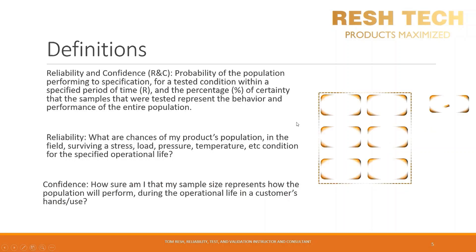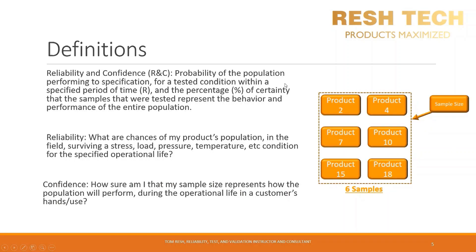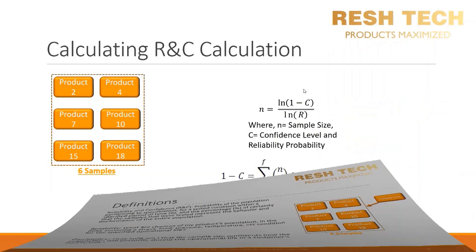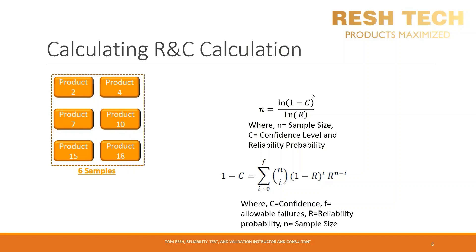Now let's go back to the original six samples selected from the population and use them to learn how to determine sample size based on reliability and confidence. We will cover two equations: the natural logarithmic equation for reliability and confidence sample size determination, and the nonparametric binomial equation. The major difference is that the natural log equation does not consider allowable failures, while the binomial equation takes allowable failures into account. These correspond to the options listed under the sampling plans for both AQL and LTPD tables.